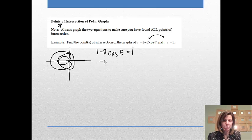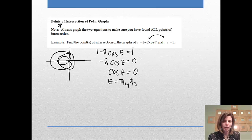And then if I subtract 1 from both sides, I'll get negative 2 cosine theta is equal to 0. And then if I divide both sides by negative 2, I will get cosine theta equals 0. And then I need to decide where does the cosine equal 0, and that would be at theta equals pi over 2, and 3 pi over 2.